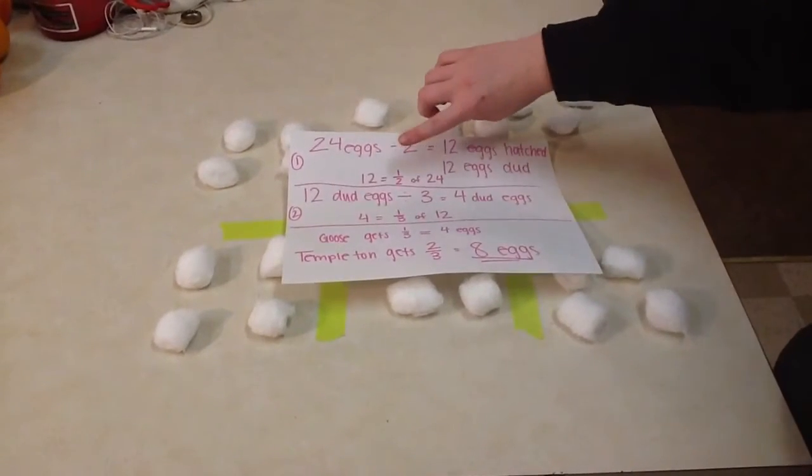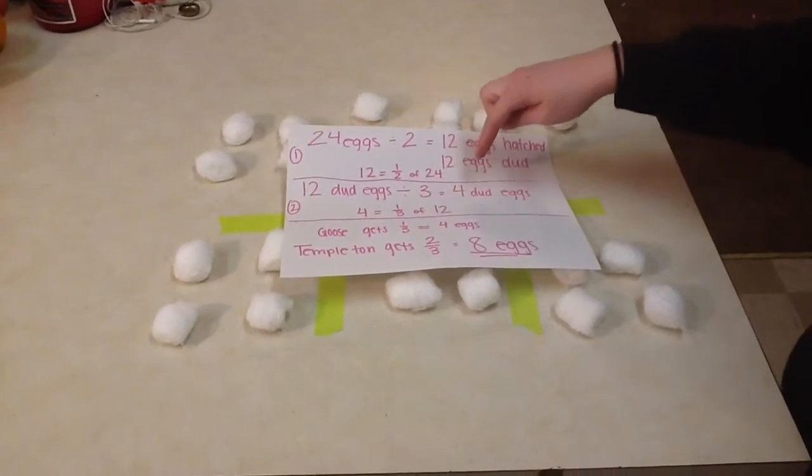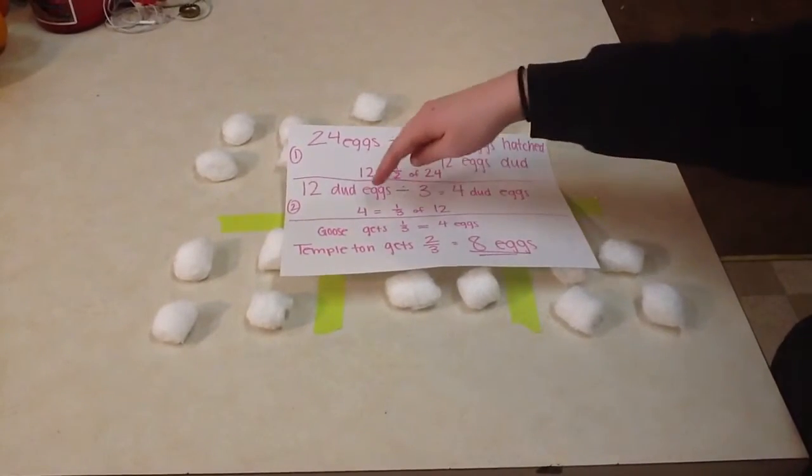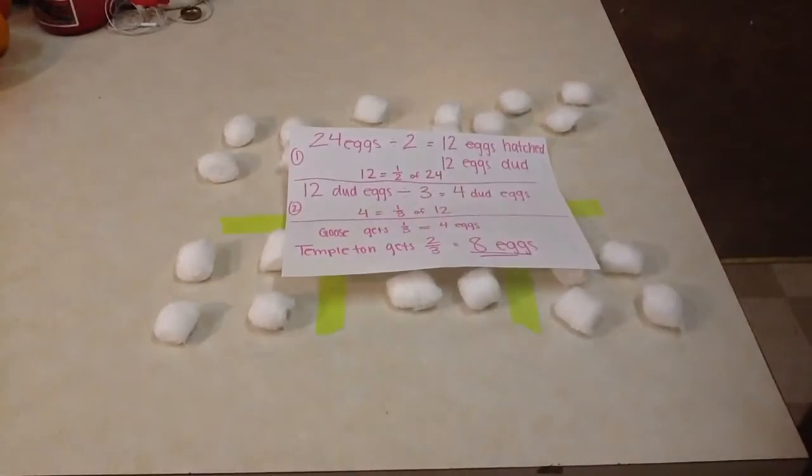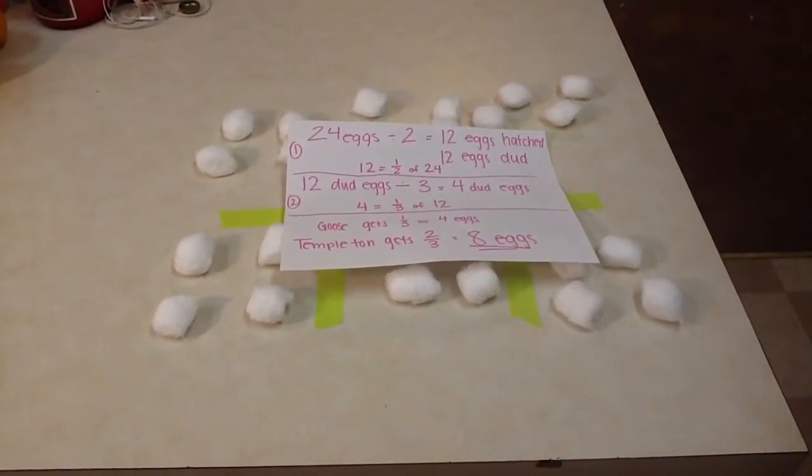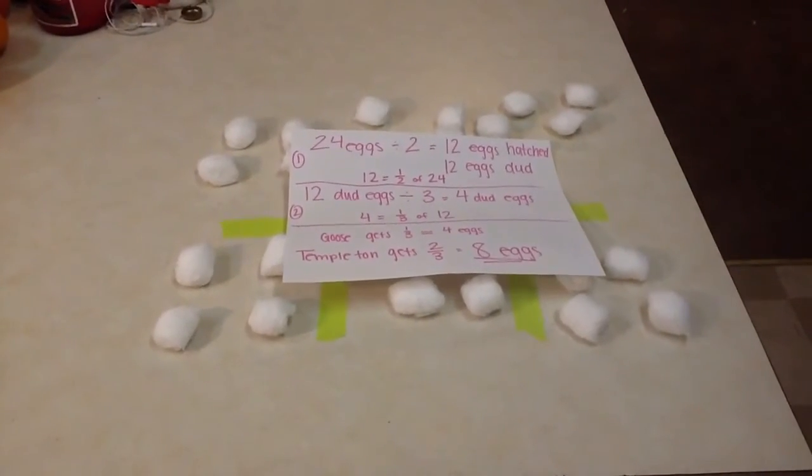The second part you take the 12 dud eggs and divide it into 3 parts, which is 4 dud eggs, and 4 is 1 third of 12. Goose gets 1 third of the 12, which is 4 eggs, and Templeton gets 2 thirds of the 12, which is 8 eggs.